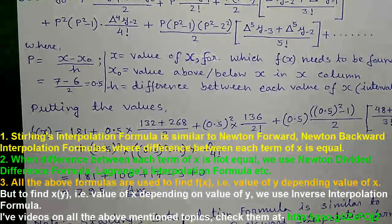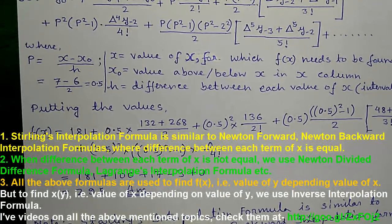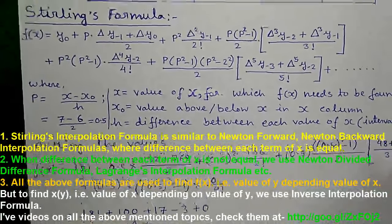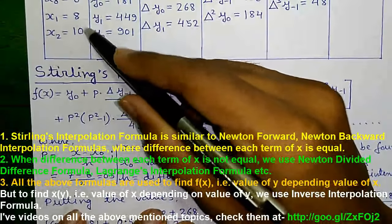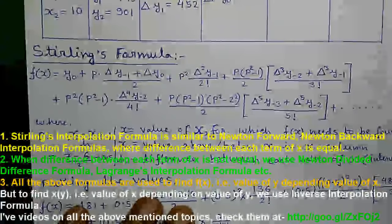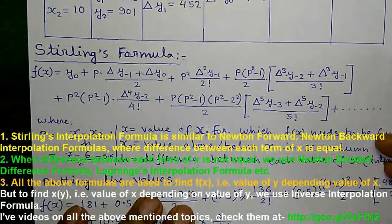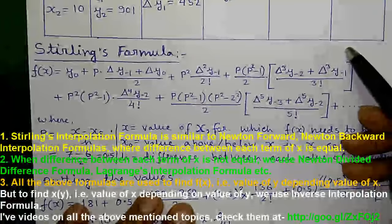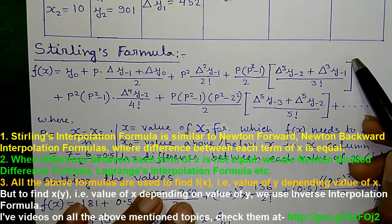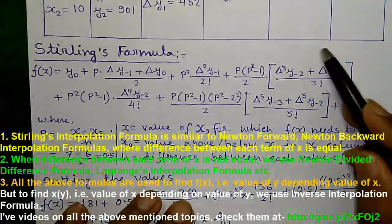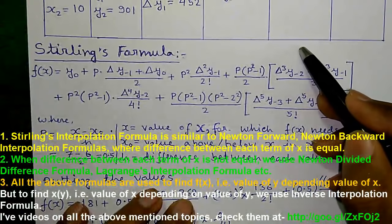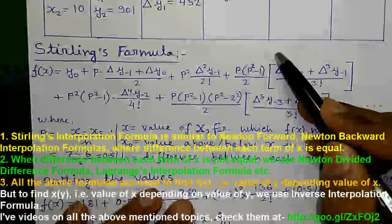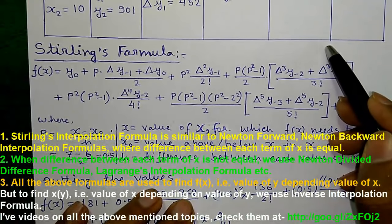Some important notes: Point 1 — Stirling's interpolation formula is similar to Newton forward and Newton backward interpolation formulas where the difference between each term of x is fixed. Here the difference is 2, which is fixed. Point 2 — When the difference between each term of x is not fixed, we use Newton's divided difference formula or the Lagrange interpolation formula. Point 3 — To find f of x for a given value of x we use Newton forward, Newton backward, and Stirling's interpolation formulas, as well as Newton's divided difference and Lagrange formula. To find x for a given value of y (inverse), we use the inverse interpolation formula.